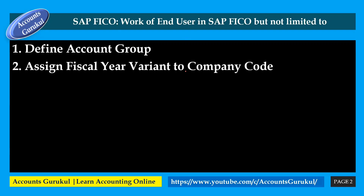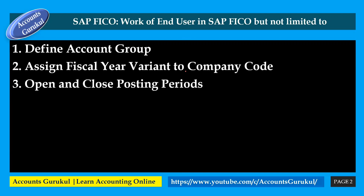The expectation is that you should know what fiscal year means in SAP and how many periods there are. There are 12 normal periods and 4 adjustment periods, making a total of 16 periods in SAP. Next: open and close posting periods. You should be well-versed with this concept — what open and close posting periods mean and how to do that.